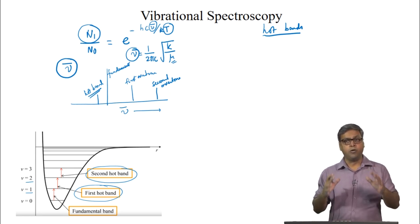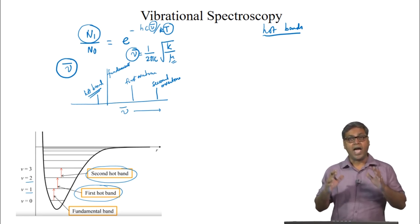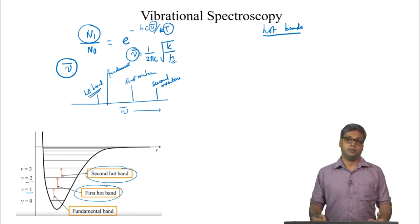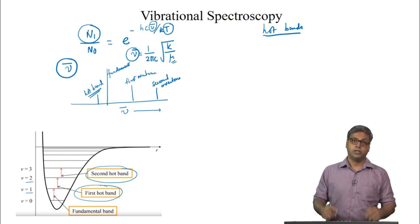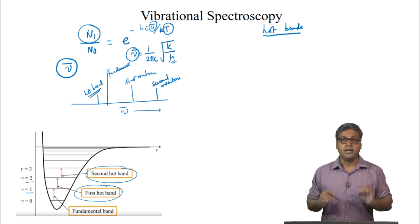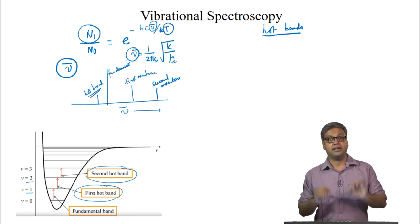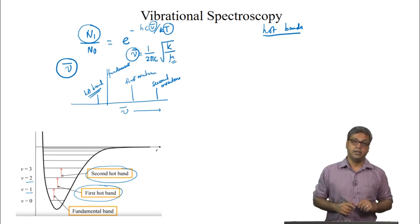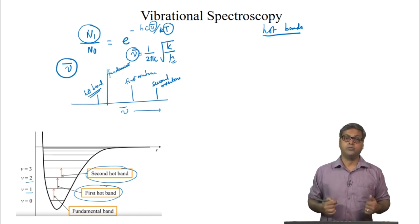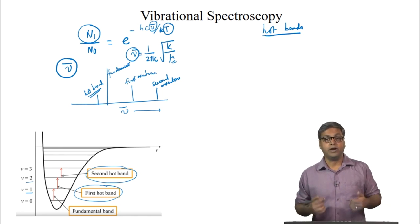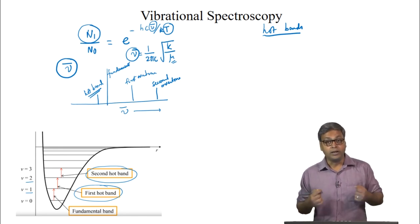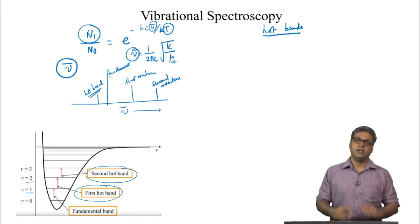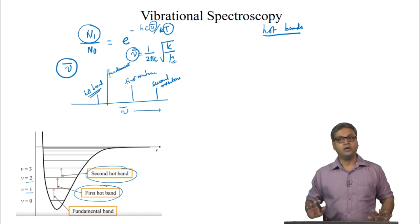There will be a change in the response of hot bands compared to overtones with temperature. With increasing temperature, the population of the excited vibrational state increases at the expense of V=0. This means the intensity of hot bands increases while the intensity of the fundamental band decreases as temperature increases.